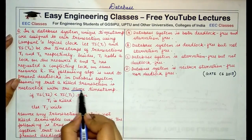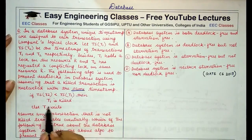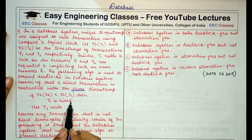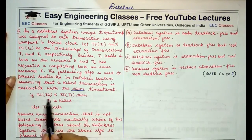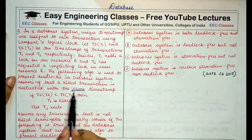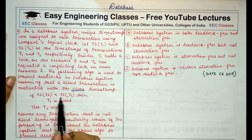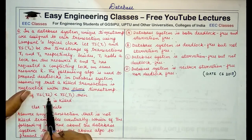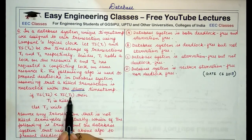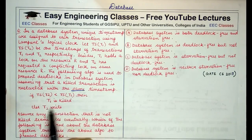This is the algorithm given to you: if the timestamp of T2 is less than the timestamp of T1 — meaning T2 is older than T1 — then T1 gets killed; else T2 waits.